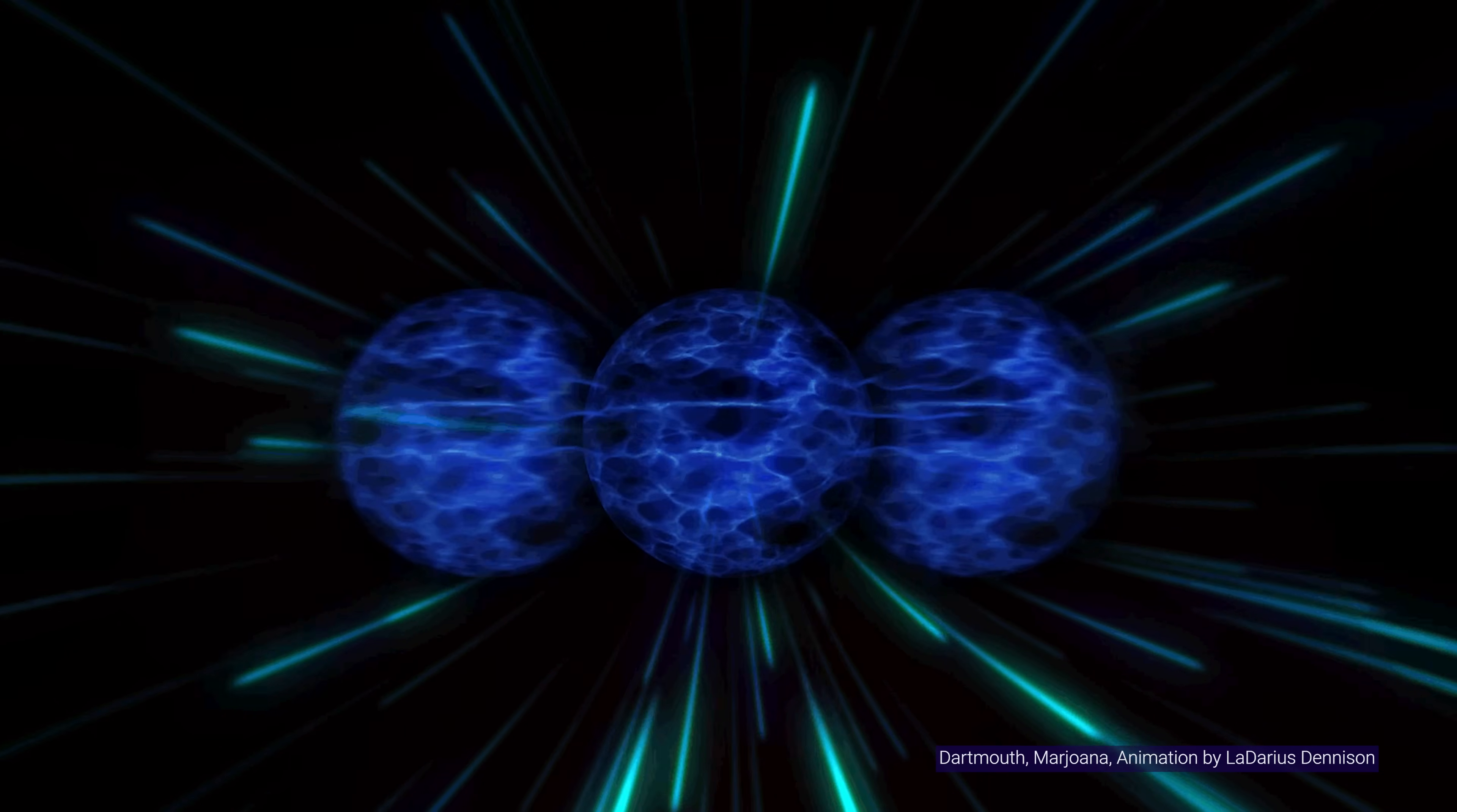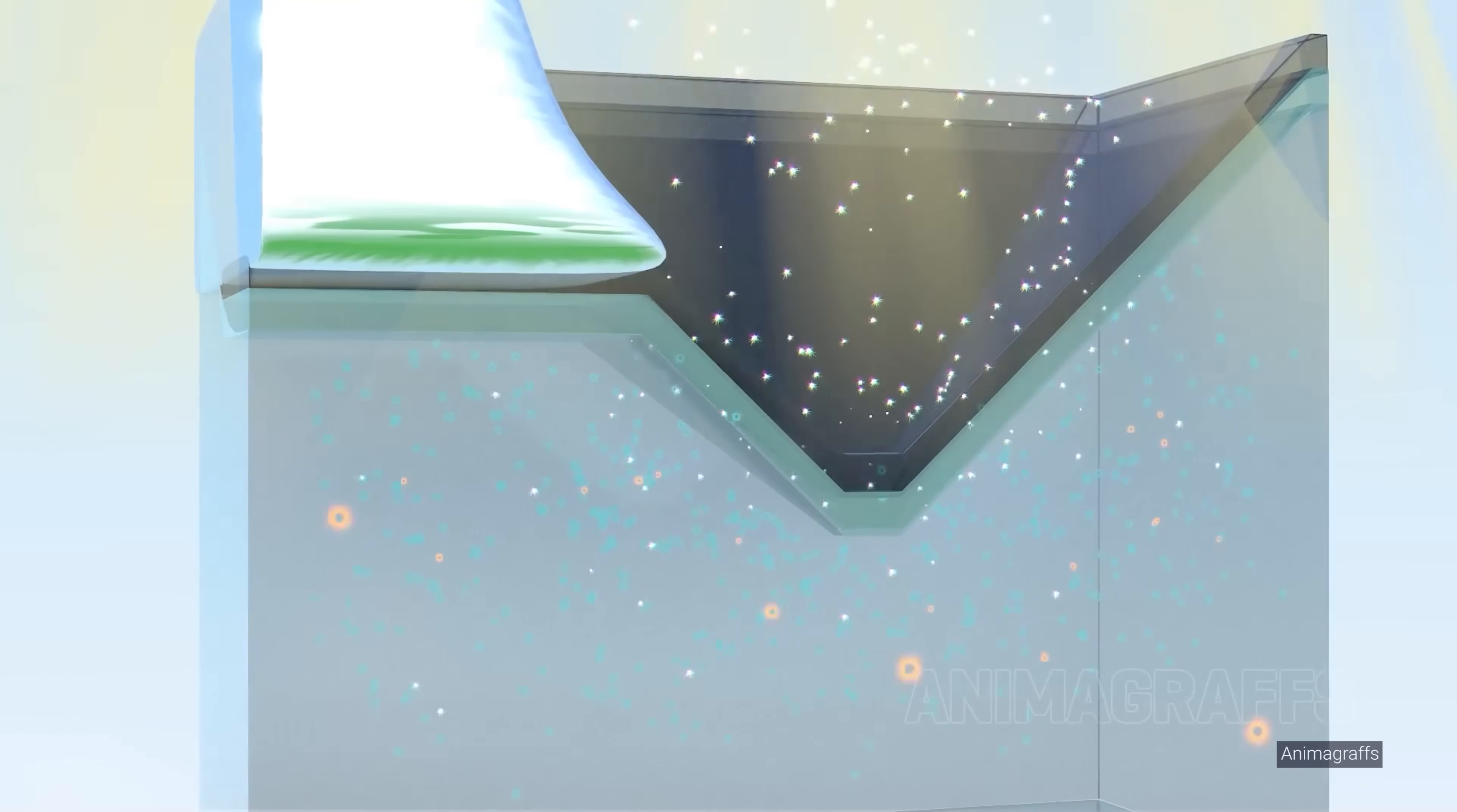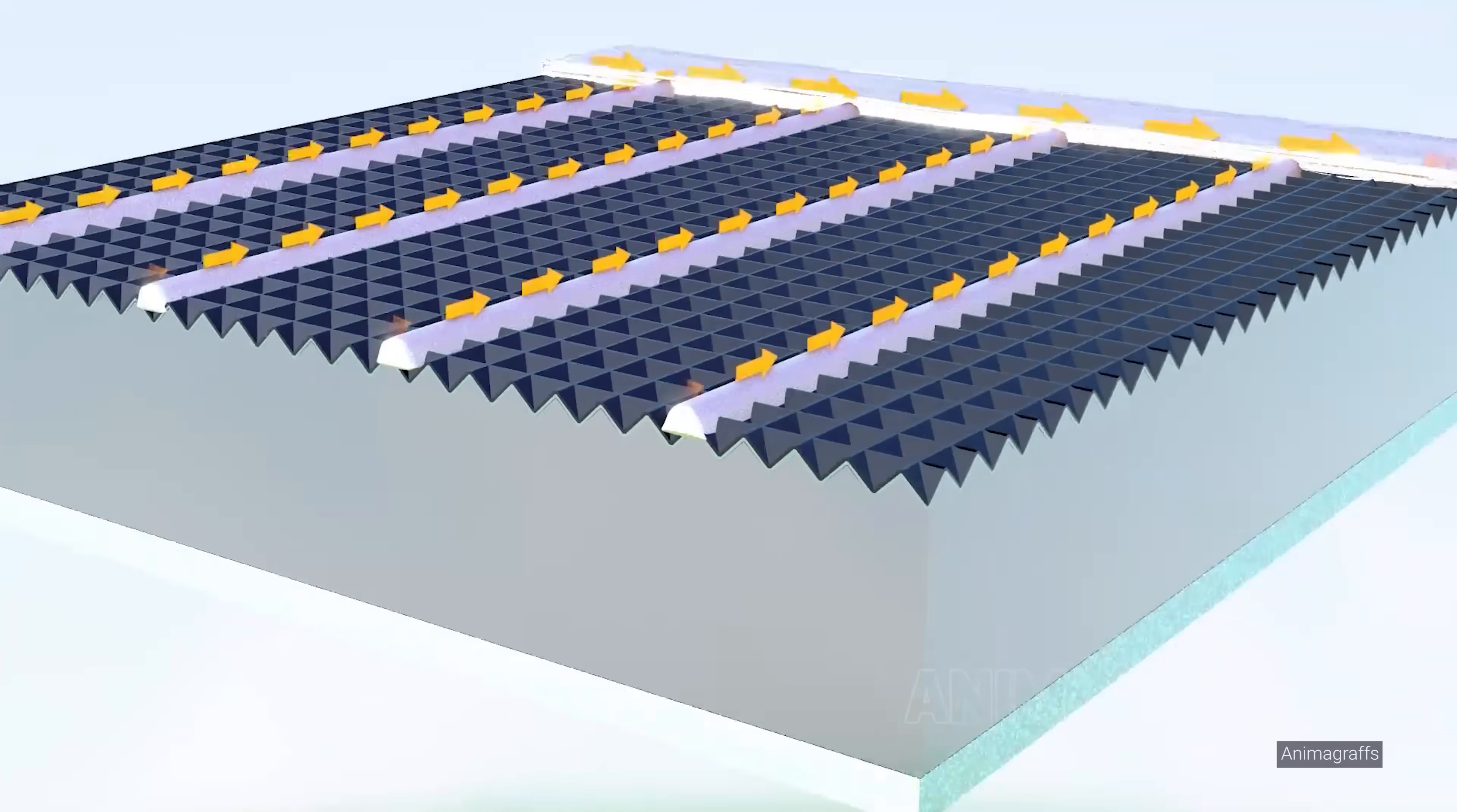This electric field corresponds to a built-in voltage and acts like a one-way valve for charge carriers. The fundamental unit of light is the photon, which represents the smallest packet of electromagnetic radiation of a given wavelength. When a photon from sunlight hits a solar cell and gets absorbed, it creates an extra free electron and hole.